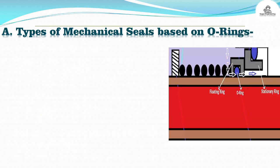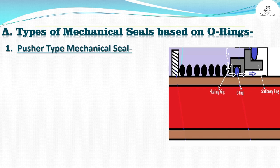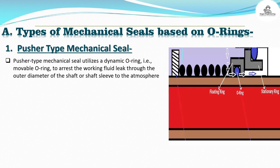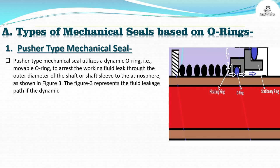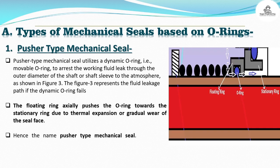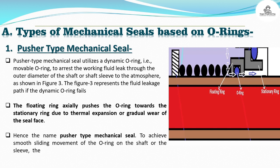Types of mechanical seals based on O-rings. Pusher type mechanical seal: A pusher type mechanical seal utilizes a dynamic O-ring — i.e., a movable O-ring — to arrest the working fluid leak through the outer diameter of the shaft or shaft sleeve to the atmosphere, as shown in Figure 3. The floating ring axially pushes the O-ring towards the stationary ring due to thermal expansion or gradual wear of the seal face. Hence the name pusher type mechanical seal. To achieve smooth sliding movement of the O-ring on the shaft or sleeve, the surface must be very smooth.